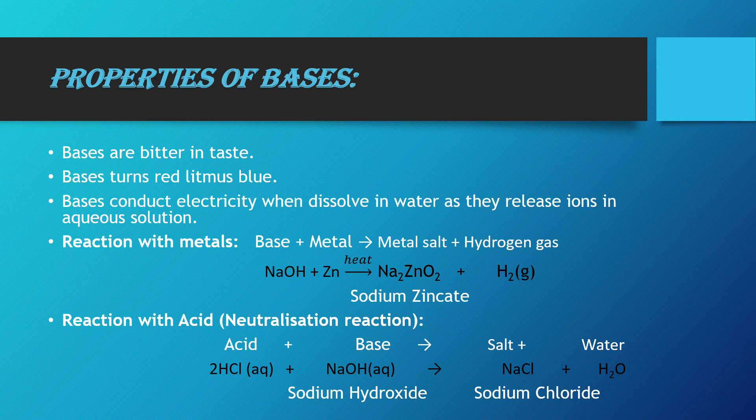Next is a chemical property of bases — the reaction of a base with a metal. Whenever a base reacts with a metal, they produce a metal salt and hydrogen gas. For example, when sodium hydroxide reacts with zinc, it produces sodium zincate (Na₂ZnO₂) plus hydrogen gas. The test for hydrogen gas is that it burns with a pop sound — a very important test.